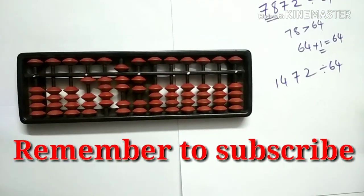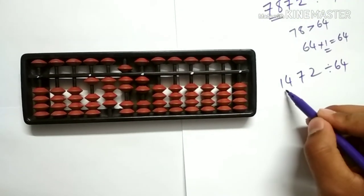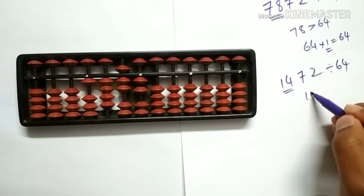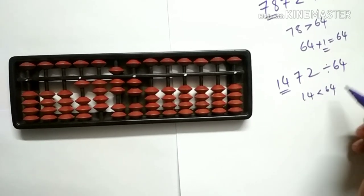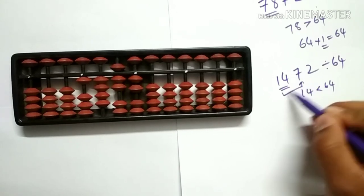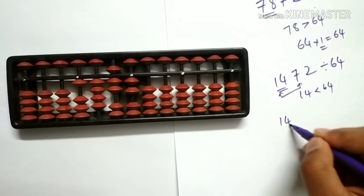Again, check for the first 2 digits. Here the first 2 digits are 14. Because 14 is less than 64, let's go for the first 3 digits. The first 3 digits are 147.